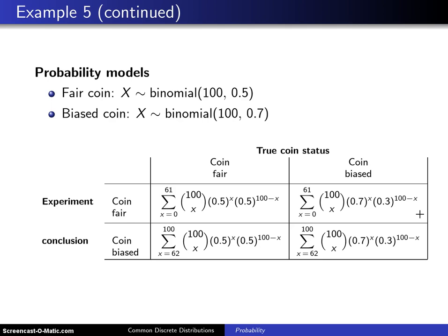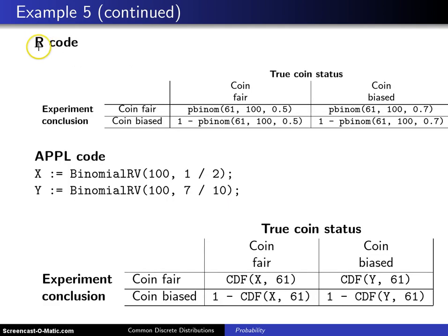So on the next page, there are solutions for these four probabilities, both done in R and done in Maple. So in R, you use the pbinom function, and here is the pbinom when there are 61 or fewer in both of these cases. And for the fair coin, you have a probability of 0.5. For the biased coin, you have a probability of 0.7. And then when we want the probability of 62 or more heads, that's 1 minus the probability of 61 or fewer. And so you get 1 minus pbinom in both of these cases.